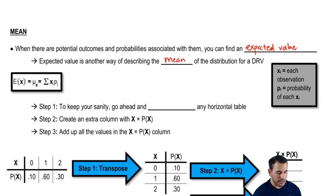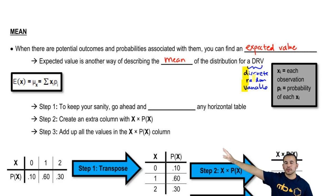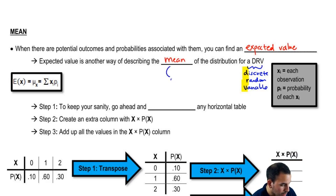This expected value is another way of describing the mean of the distribution for a discrete random variable. Remember, DRV is discrete random variable. Here we have the formula for the mean, and E(X) is basically the expected value of this random variable X. E equals mu.